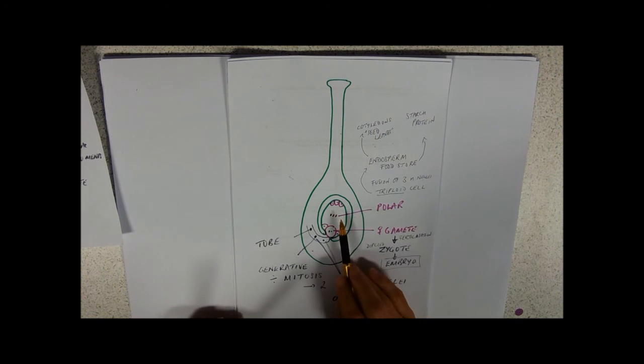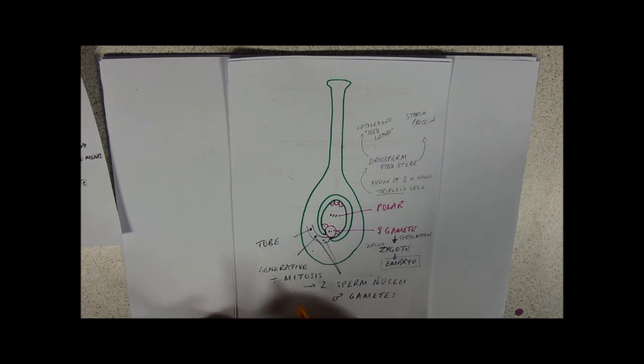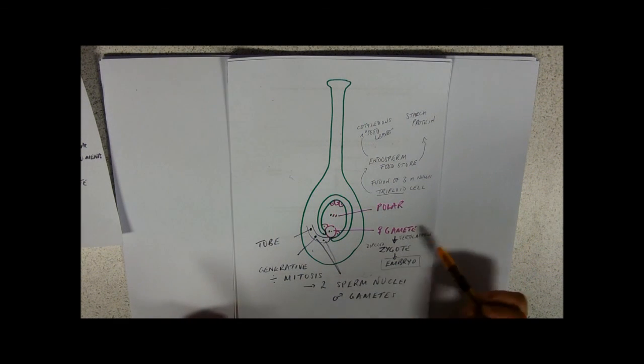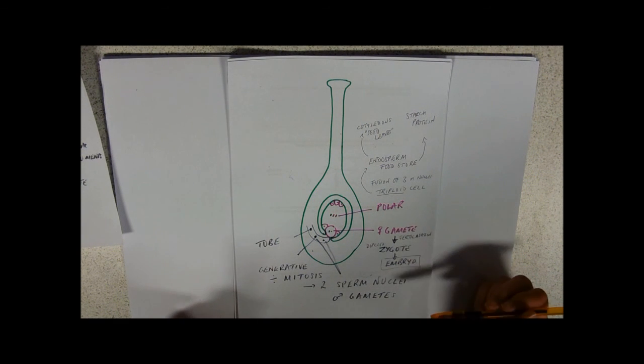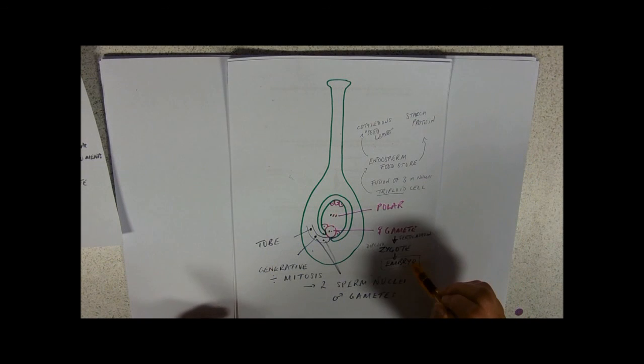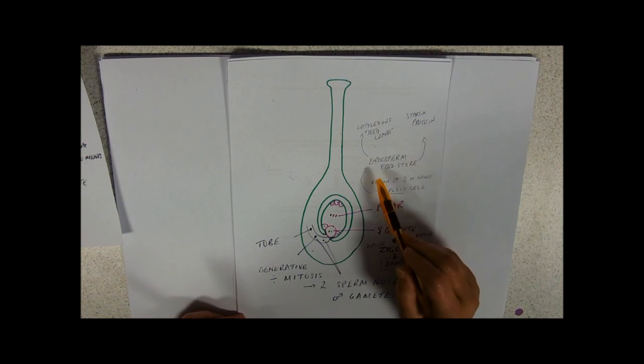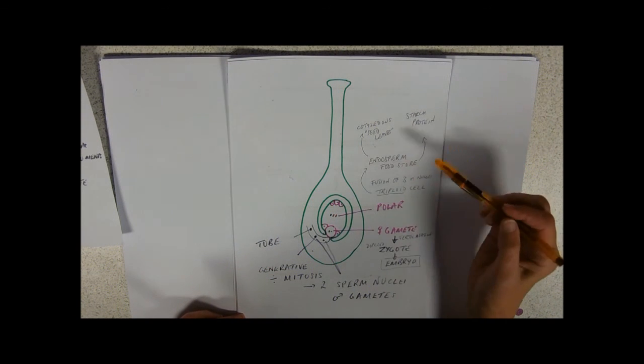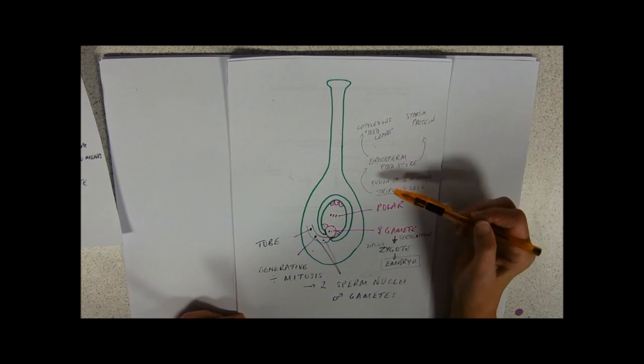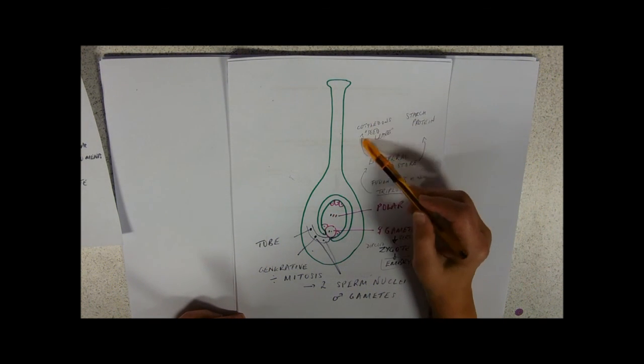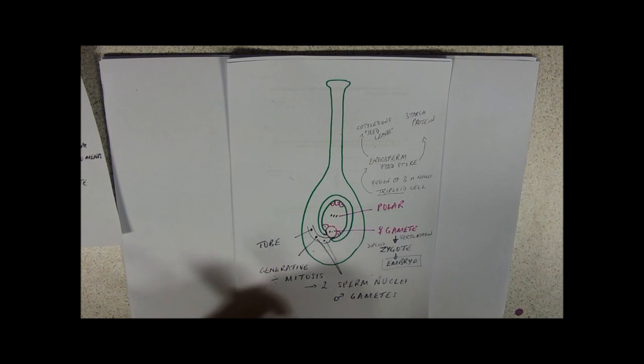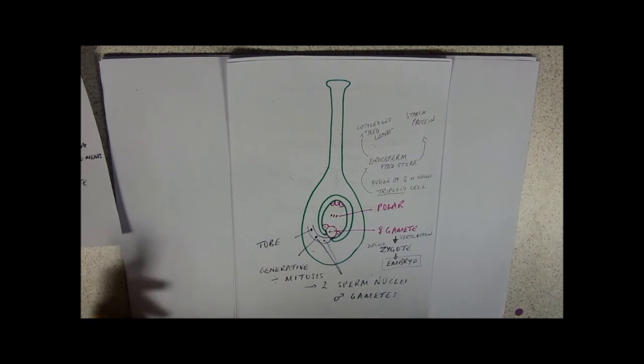So, double fertilisation. One fertilisation of the polar nuclei, one of the female gamete, two fertilisations. Female gamete gives a diploid zygote, which goes on to develop into an embryo. Polar nuclei, triploid cells make the endosperm, which is a food store of starch or protein, sometimes gets absorbed into cotyledons or seed leaves. Not that difficult.